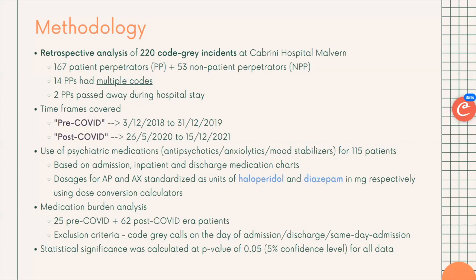We did a retrospective analysis of 220 code gray incidents at Cabrini Malvern, which included 167 patient and 53 non-patient perpetrators. Fourteen patients had multiple codes and two passed away during their stay. For medication analysis, we recorded psychiatric medication use for 115 patients based on admission, inpatient, and discharge medication charts, standardizing antipsychotic dosages as units of haloperidol and anxiolytics as units of diazepam in milligrams using dose conversion calculators. All data was calculated at a statistical significance of five percent.